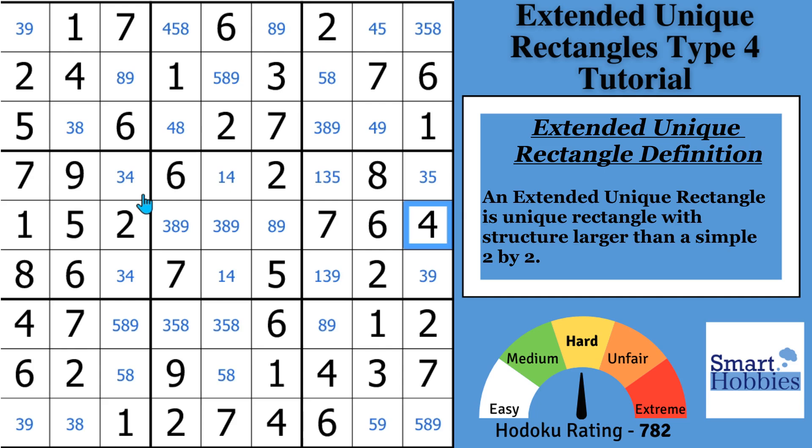And what you're looking for are two naked triples where one or two of the cells contains extra candidates. If you look across row 4, you might notice you have a 3-4 here, a 1-4 there, and you have a 1-3 right there with an extra candidate 5. If you didn't have that 5, you'd have a 1-3-4 naked triple. You'd also have a 1-3-4 naked triple right here in row 6 except for this extra 9. This situation is going to create this unique rectangle Type 4 for us.